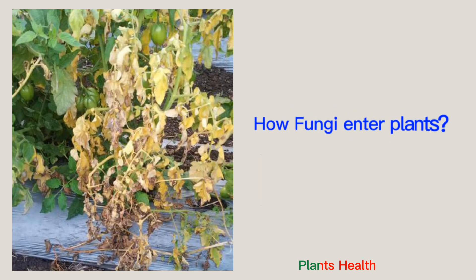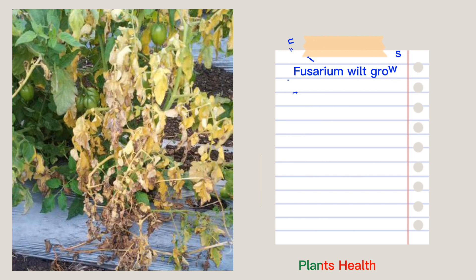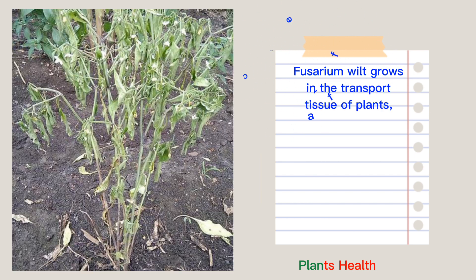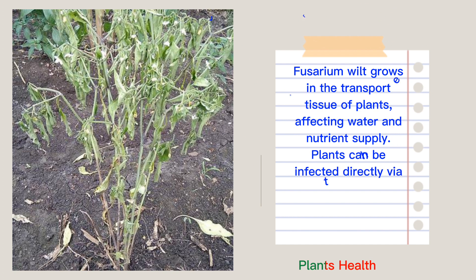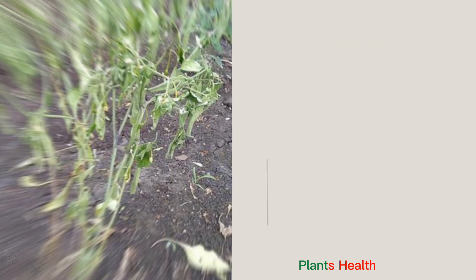How do fungi enter plants? Fusarium wilt grows in the transport tissue of plants, affecting water and nutrient supply. Plants can be infected directly via their root tips or through wounds in the roots.